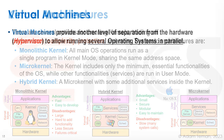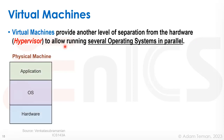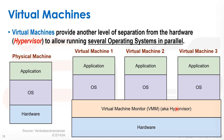Another important concept is the virtual machine — not to be confused with virtual memory; it's something completely different. A virtual machine provides another level of separation from the hardware to allow running several operating systems in parallel, and this relates to the hypervisor mode being developed for RISC-V. In a regular physical machine we have hardware, the operating system, and applications. A virtual machine adds another level of abstraction called the hypervisor or virtual machine monitor, which sits on top of the hardware and is the only one that communicates directly with it.